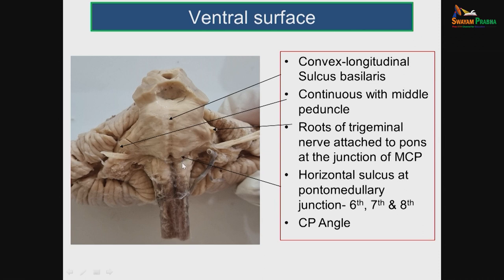An important feature is the CP angle — the cerebellopontine angle. This is clinically very important because it is the junction between the pons, cerebellum and the medulla, with many cranial nerves attached here and the cerebellar peduncle present. Any tumor pressing at this area causes significant clinical problems, producing CP angle syndrome.